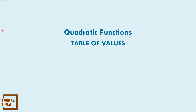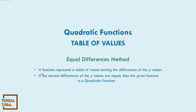How to identify the quadratic function when the table of values is complete? We need to use the equal differences method. This method looks at the difference of the y values. If the second difference of the y values are equal, then the given function is a quadratic function.